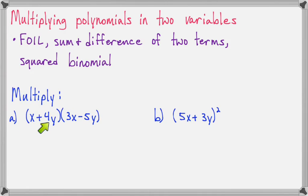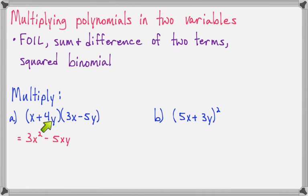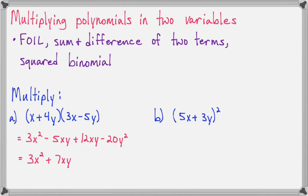I have x plus 4y times 3x minus 5y. This does not look like either our sum and difference of 2 terms or our squared binomial problems, so I'll just use the straight FOIL method on it. x times 3x is 3x squared. x times negative 5y is minus 5xy. 4y times negative 5y is minus 20y squared. Notice that our two middle terms can be combined, so we'll have 3x squared plus 7xy minus 20y squared.